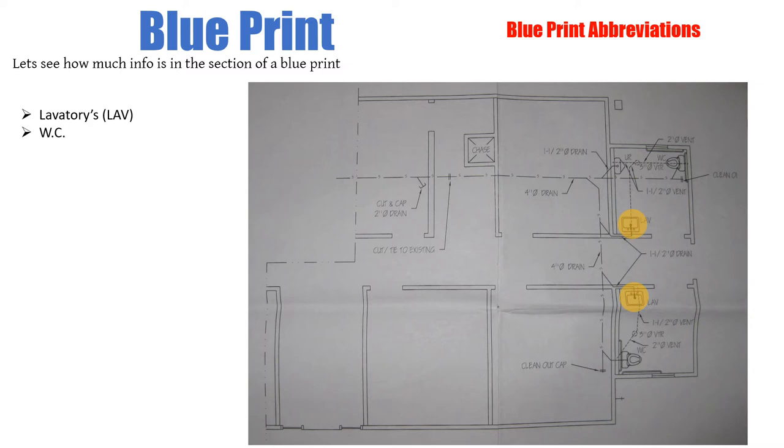Can you see the WCs? WCs stand for water closets, which is a toilet. So how many toilets do we see here? Well, we have one here with this abbreviation WC, and we have another one here with its abbreviation WC. So we have two toilets.